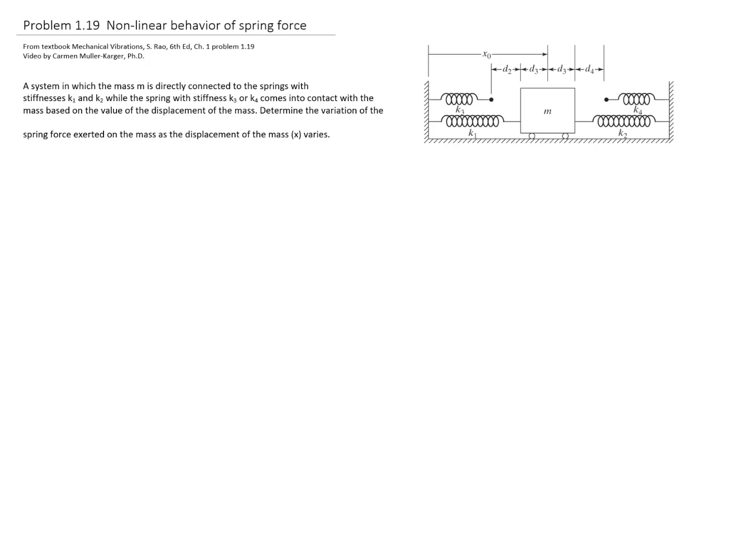So we have a system in which the mass m is directly connected to springs with stiffness k1 and k2, while the springs of stiffness k3 or k4 come into contact with the mass based on the value of the displacement of the mass. We will measure the displacement of the mass with the variable x from the center of the mass. We'd like to determine the variation of the spring force exerted on the mass as the displacement of the mass varies.